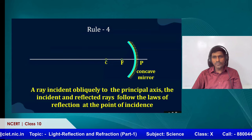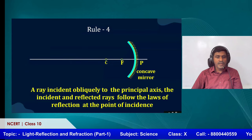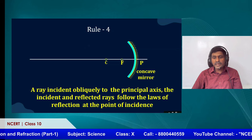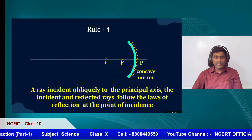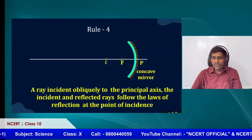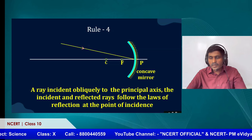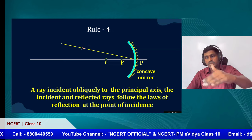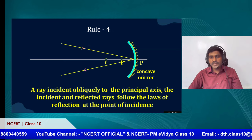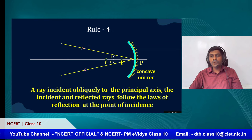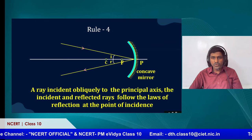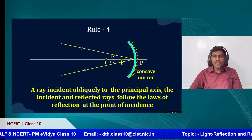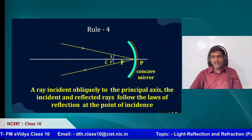The last rule — rule 4: a ray incident obliquely to the principal axis follows the laws of reflection at the point of incidence. Here, P is the point of incidence. A ray of light is incident on the point and it is reflected, and the angle of incidence must equal the angle of reflection. These are the four rules that can be used to construct ray diagrams wherever needed.